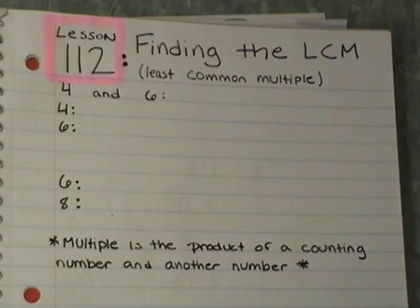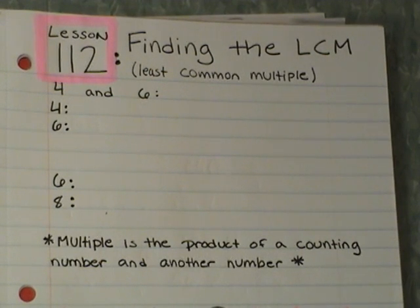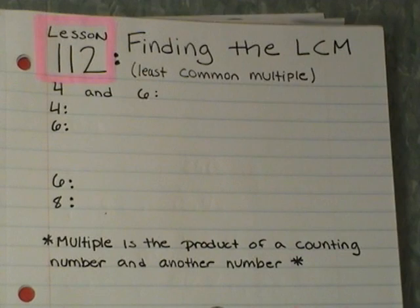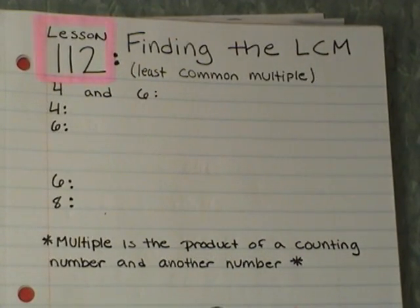I want to head down to the bottom of our notes right here and explain what a multiple is. A multiple is the product, or the answer, to a multiplication problem of a counting number and another number. So basically, the counting number we're going to use here is 4, and then any other number when we're multiplying — what their answer is.